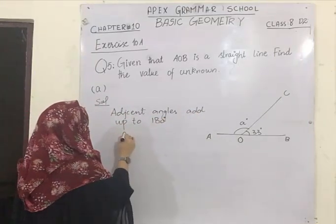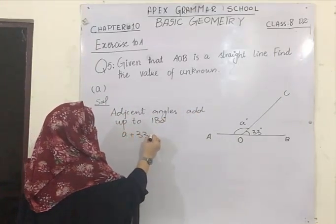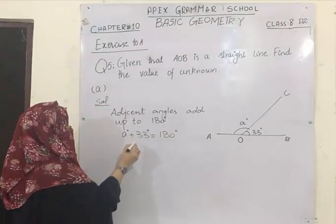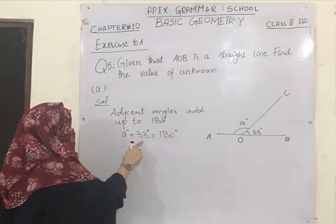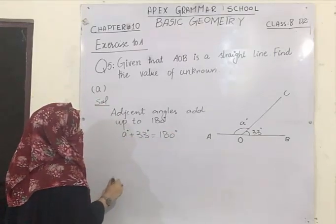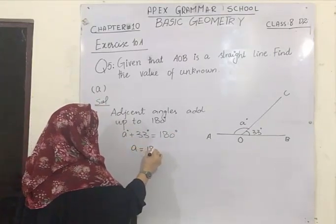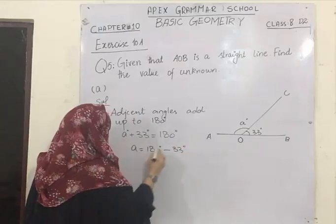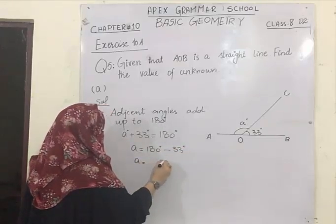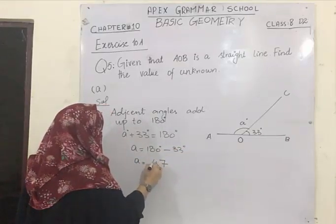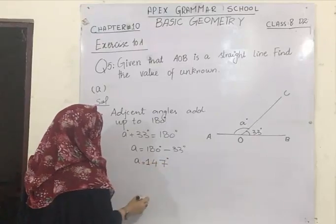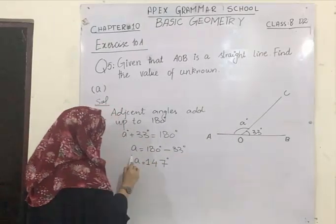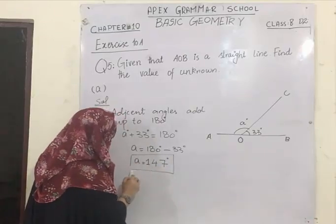Adjacent angles add up to 180 degrees. So a plus 33 will add up to make 180 degrees. We have to find the value of a, so 33 is being added on one side of the equation, so on the other side it will be subtracted. 180 minus 33 gives you 147. So the value of the unknown 'a' is 147 degrees.